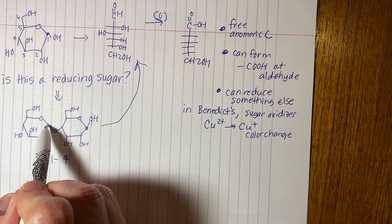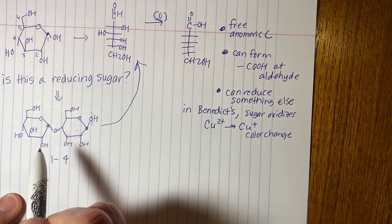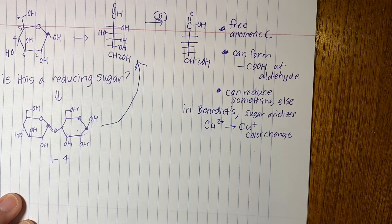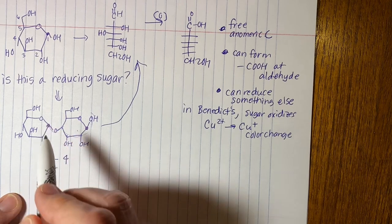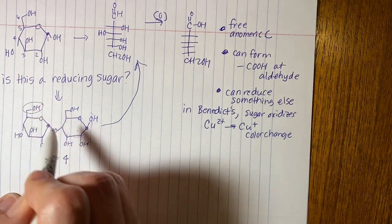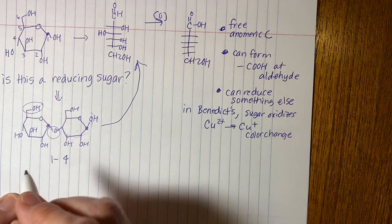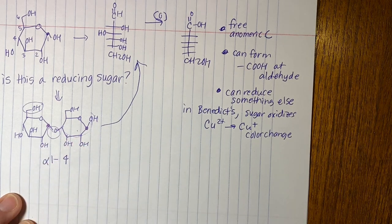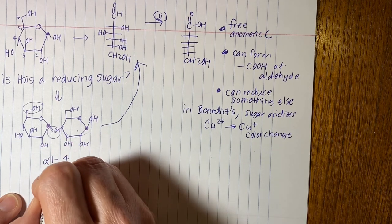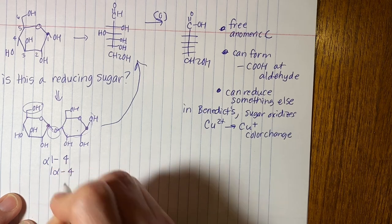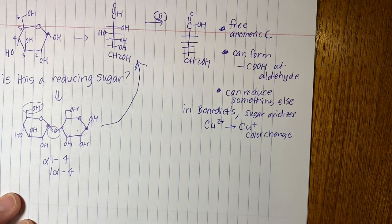And then if an anomeric carbon is in the linkage, you have to provide the Greek letter for that number. So this is the anomeric carbon. This is on the top side. This is on the bottom side. So that's an alpha. You can write alpha 1, 4, or you could write 1, alpha, 4. Either way is fine. Okay, that's it. If you have questions, let me know.